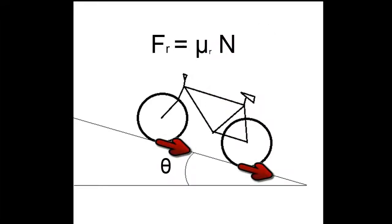The rolling resistance, Fr, which is equal to mu r n, where mu r is the coefficient of rolling resistance between the wheels and the road.